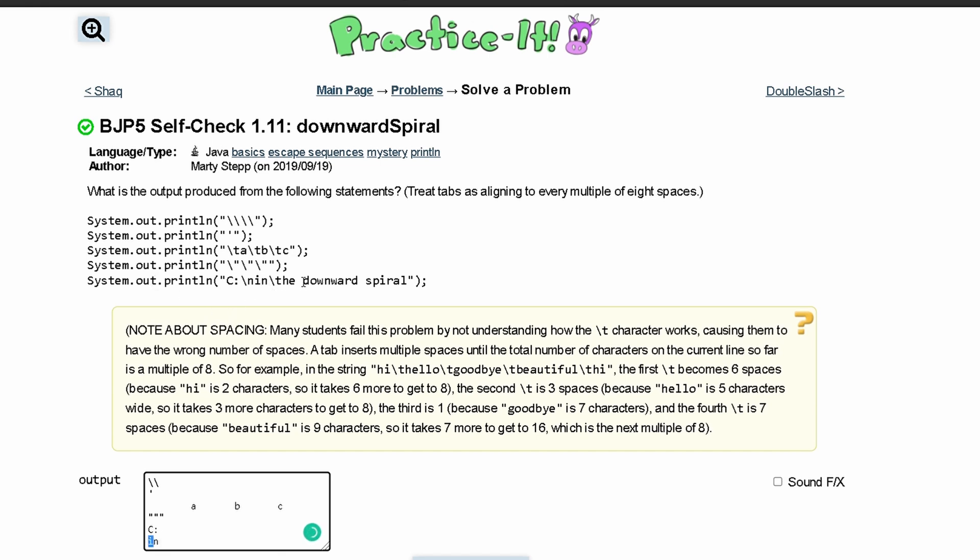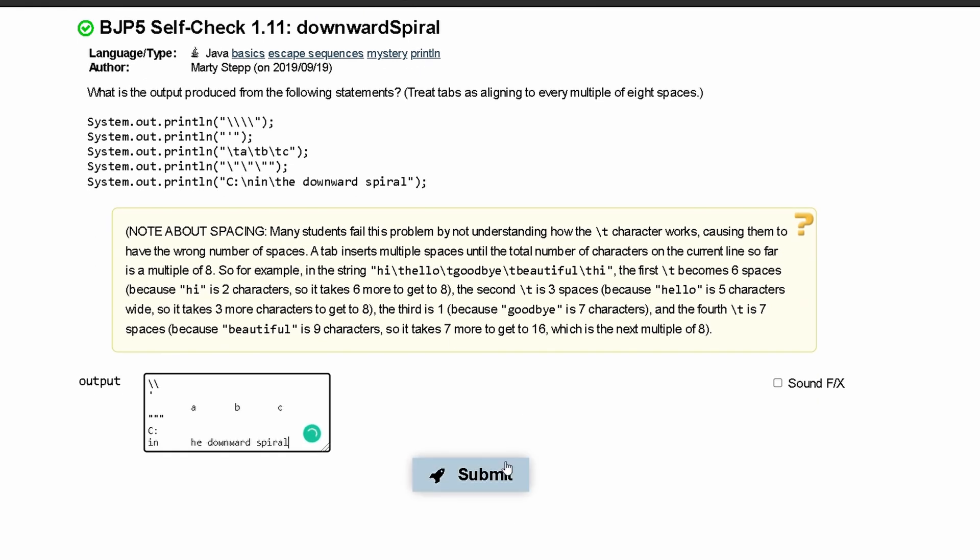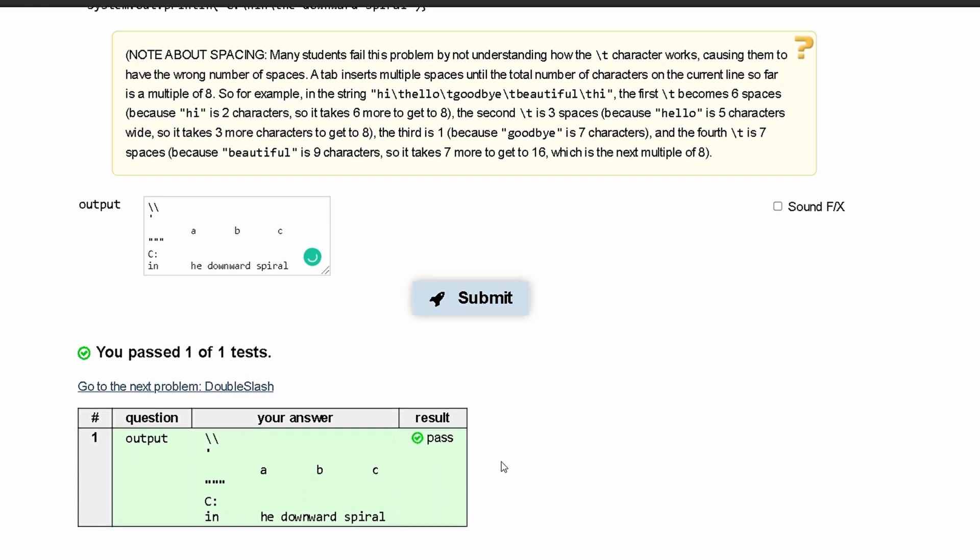We have two spaces right here, so we're gonna have two, three, four, five, six, seven, eight, and then we have 'he downward spiral' and that passes the test.